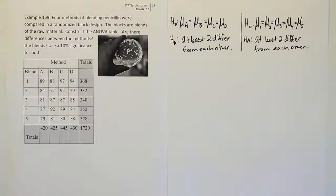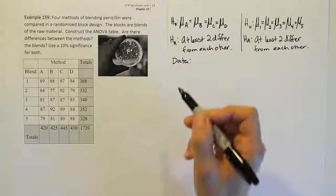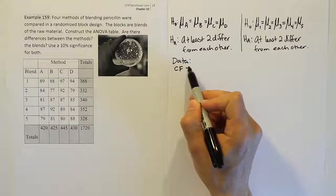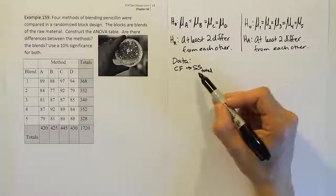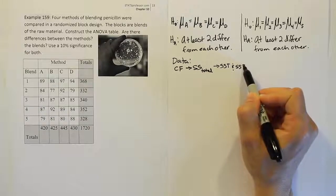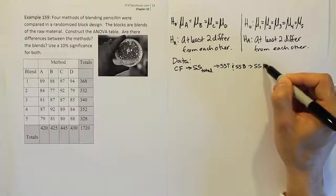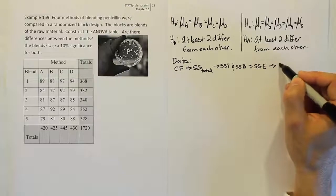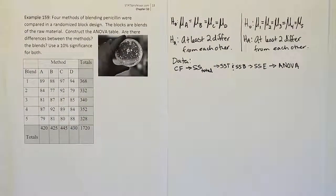Now that we have our H0s and HAs, the next step is to get the data and create the ANOVA table. To do that, we need to perform several calculations: the correction factor first, then total sum of squares, then sum of squares for treatment and for blocks, and finally the sum of squares for error.